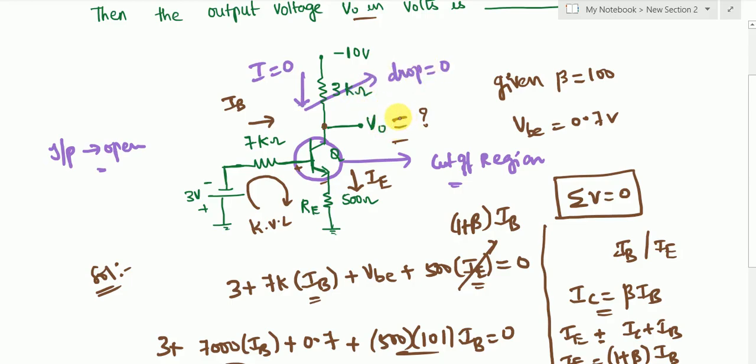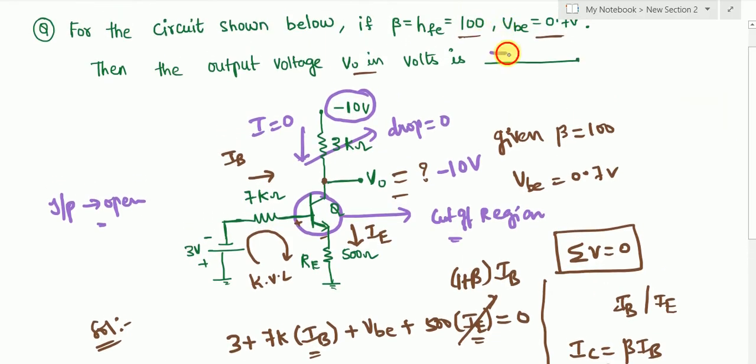So what you will see is the same potential that is present here, that is -10 volts. So Vout, the answer for this question, is -10 volts. So this is your answer.